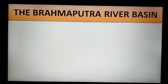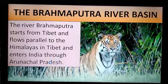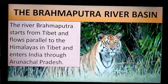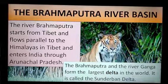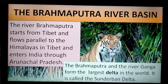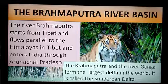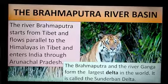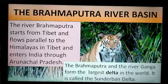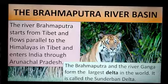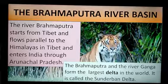The river Brahmaputra starts from Tibet and flows parallel to the Himalayas, then enters India through Arunachal Pradesh. The Brahmaputra and the river Ganga together form the largest delta in the world, called the Sundarbans Delta. Delta is a triangular-shaped land formed by the deposition of silt at the mouth of a river.